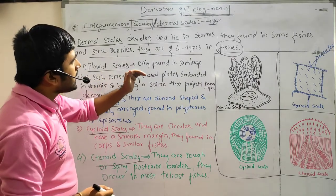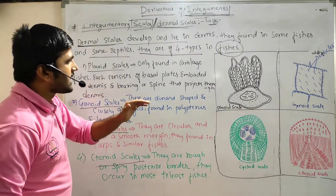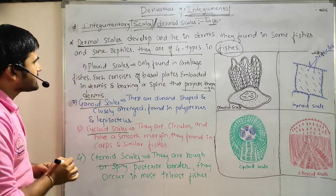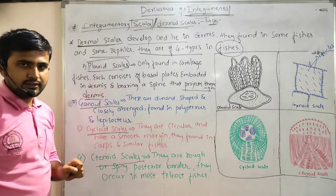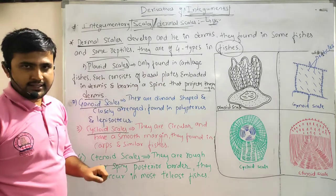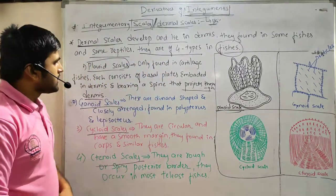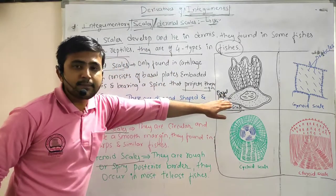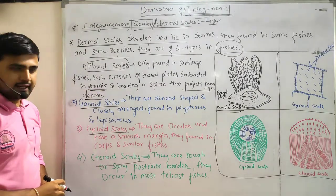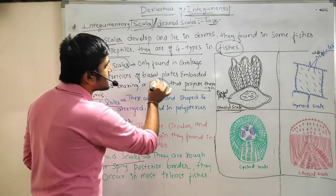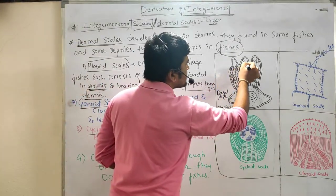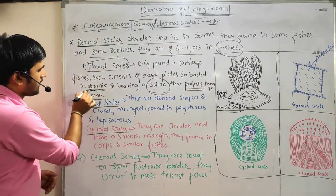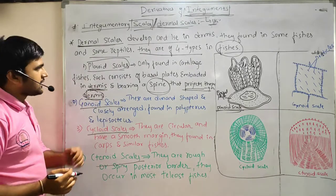Placoid scales are only found in cartilaginous fishes. Each consists of a basal plate embedded in the dermis, bearing a spine that projects through the dermis. As you can see in the diagram, this is the basal plate embedded in the dermis, and these spines project outward through the dermis.